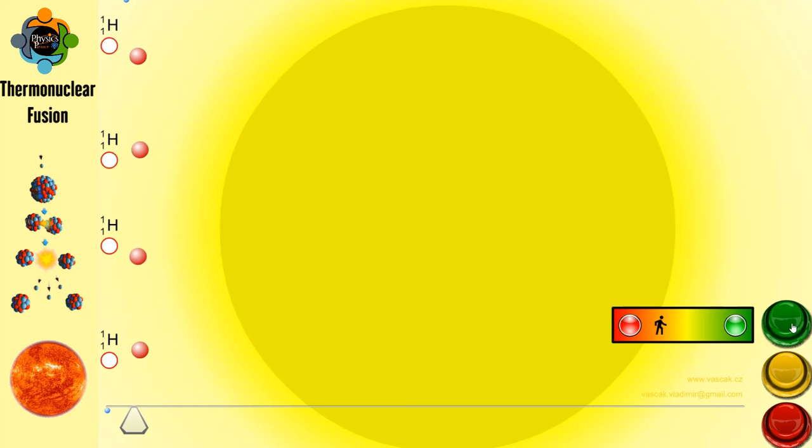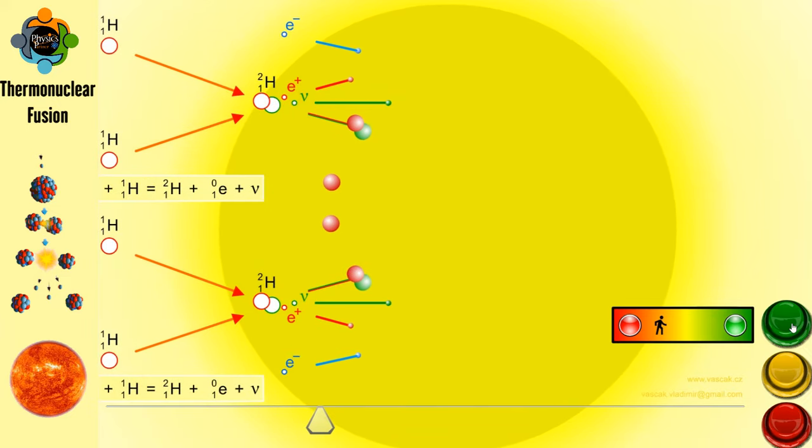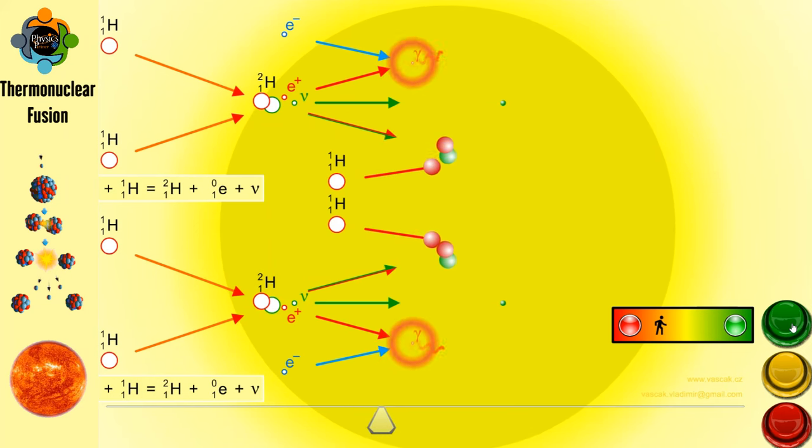The fusion reaction in the Sun, known as the proton-proton chain, involves a series of steps that ultimately result in the conversion of hydrogen into helium. In the first step, two protons combine to form deuterium, releasing a positron and a neutrino.